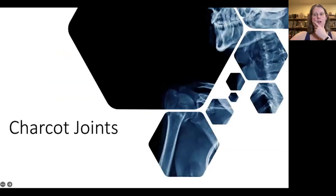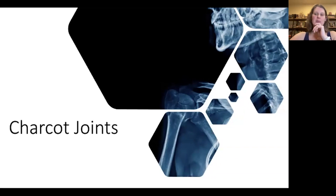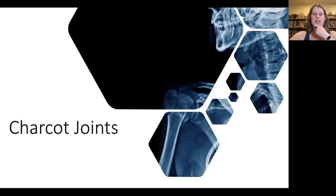Charcot's spine is a relatively rare complication and a very late complication after a spinal cord injury. The pathogenesis of the deformity is likely due to lack of sensory input to the spine below the level of injury, which leads to abnormal motions and stresses on the spine. That will cause progressive destruction of cartilage and subchondral bone damage, and it actually creates a false joint somewhere along the spine, always distal to the level of injury.